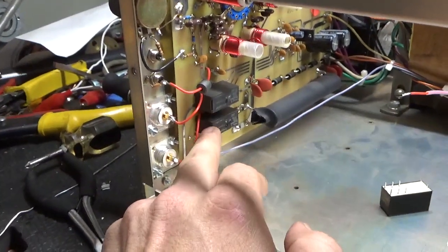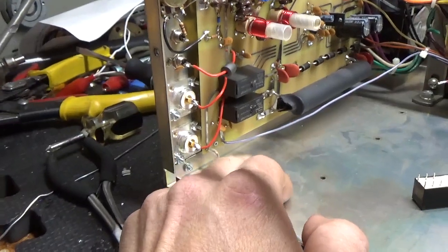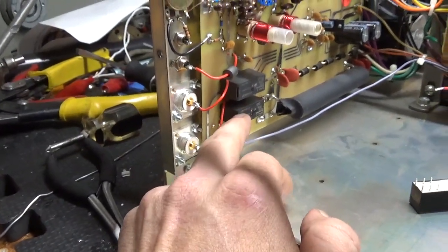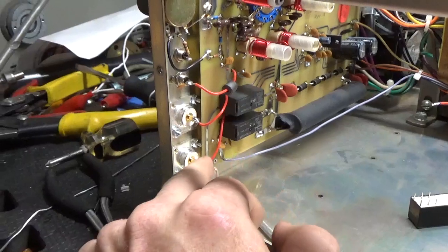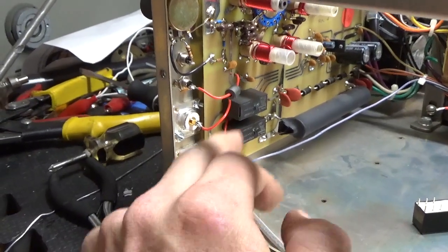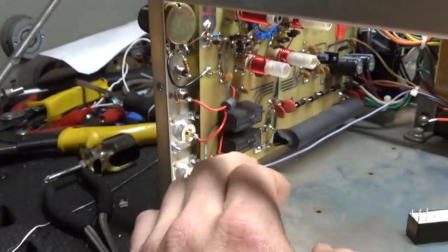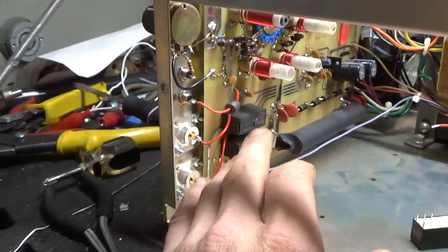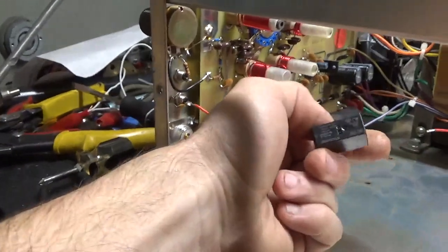Relay is no longer functional. So this relay controls the biasing and the RF switching between the input SO239 and the input circuit. So I am going to go ahead and pull that out and replace it with a brand new one.